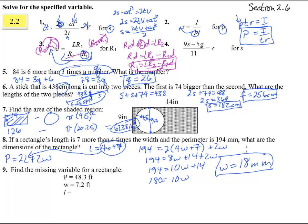Now, we also need the length because it says what are the dimensions? We're trying to find both the length and the width. So that's the width. And the length is 7 more than 4 times the width. So we have 4 times 18 is 72, and 7 more than that is 79. So this is an 18 by 79 millimeter rectangle.